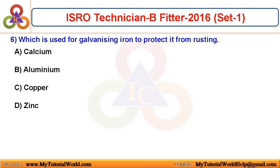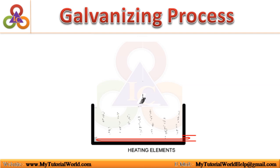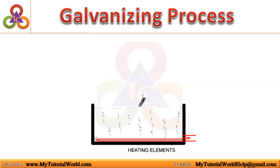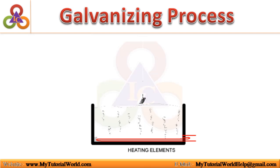Which is used for galvanizing iron to protect it from rusting? The answer is Zinc. Zinc is used to protect iron from rusting. Galvanizing is a process in which iron components are coated with zinc by dipping them into molten zinc to protect from rusting.